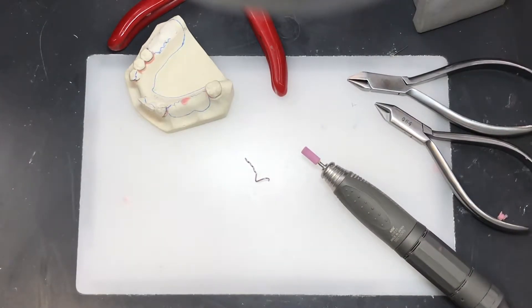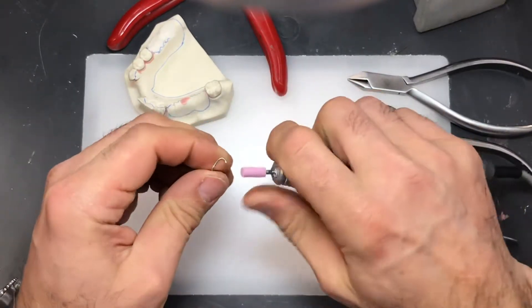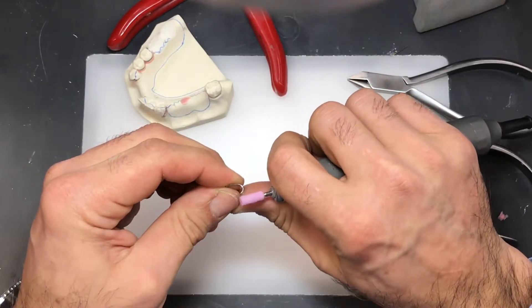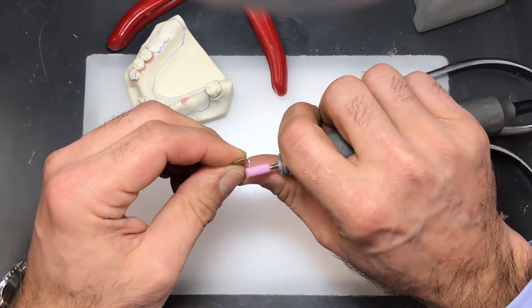You can taper it somewhat with a grinding stone as well if you want to get in a little bit finer. I'll show you on the last wire that I'm going to bend how to do that.